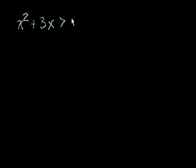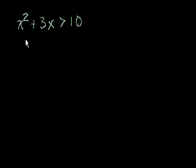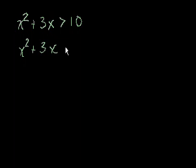Let's say I had the inequality x squared plus 3x is greater than 10. Whenever you solve a quadratic — a second degree inequality — it's tempting to do it the same way you do a linear equation, getting all the x terms on one side and all the constants on the other, but it never works because you have an x term and an x squared term. So you want to get it in standard form, where all the terms are on one side and 0 is on the other. We subtract 10 from both sides and get x squared plus 3x minus 10 is greater than 0.